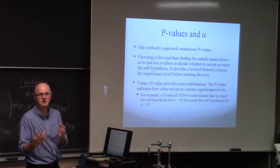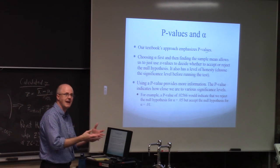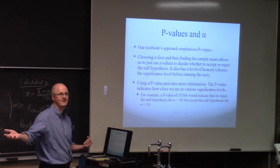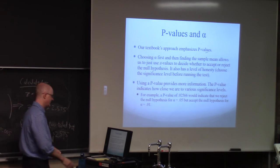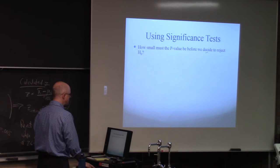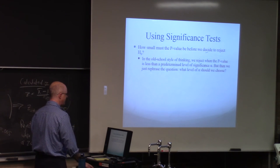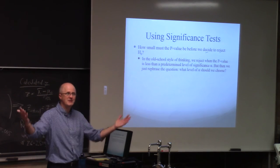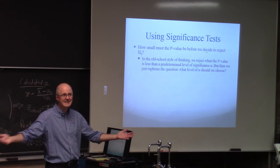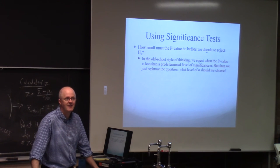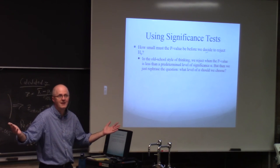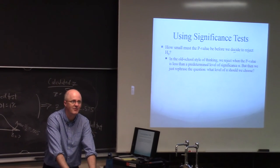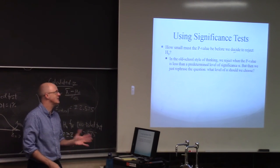How small must the p-value be before we decide to reject the null? In the old school style thinking we reject when the p-value is less than alpha. But that just rephrases the question. What should alpha be? This 5% is really arbitrary. Why not 4%? Why not 3%? Why not 6%? Why not 7%? It is really an arbitrary thing. 1%, that is arbitrary too. They are all arbitrary. How do you decide? Again, in real life it is not like the book. They don't just tell you, use this for alpha. You have to decide. So even though you might use a preset alpha, what alpha should you pick?